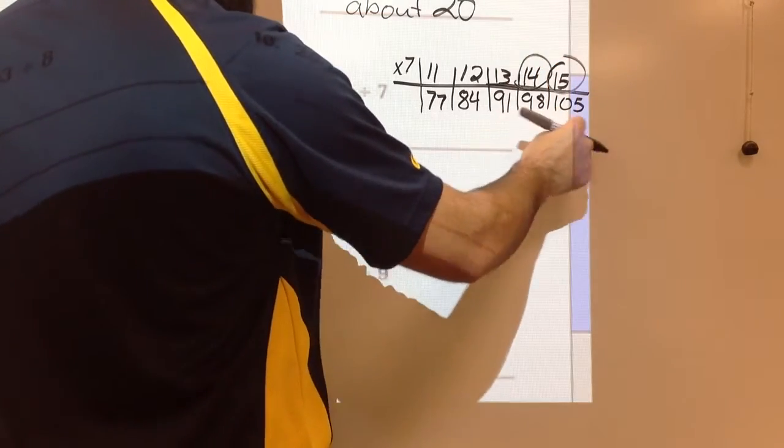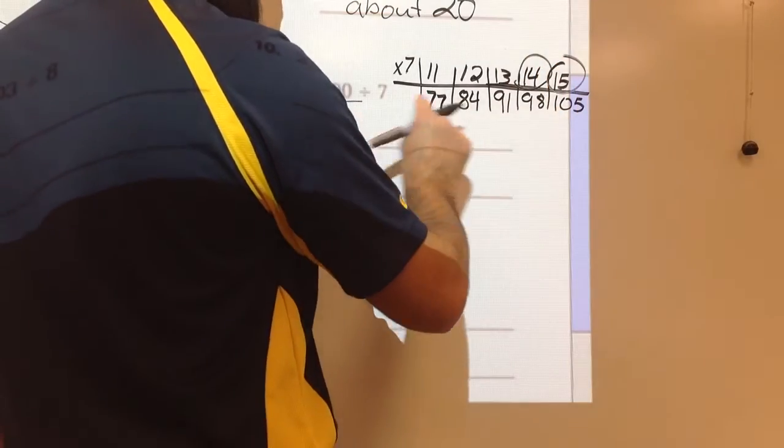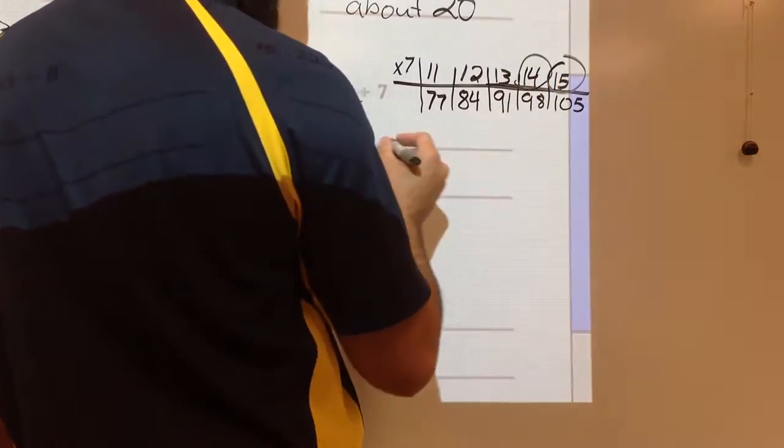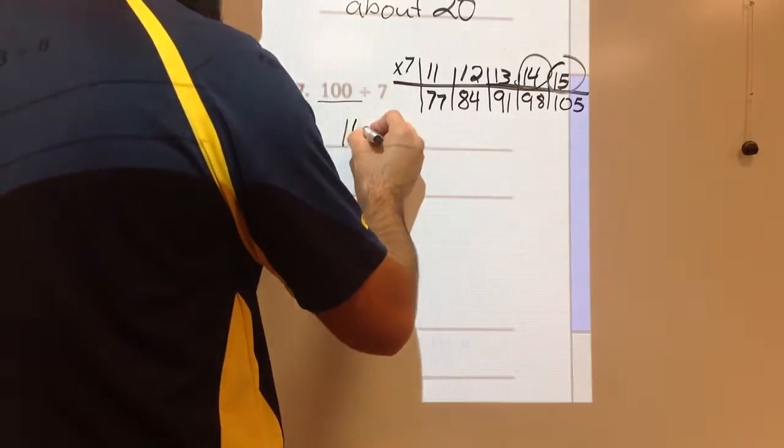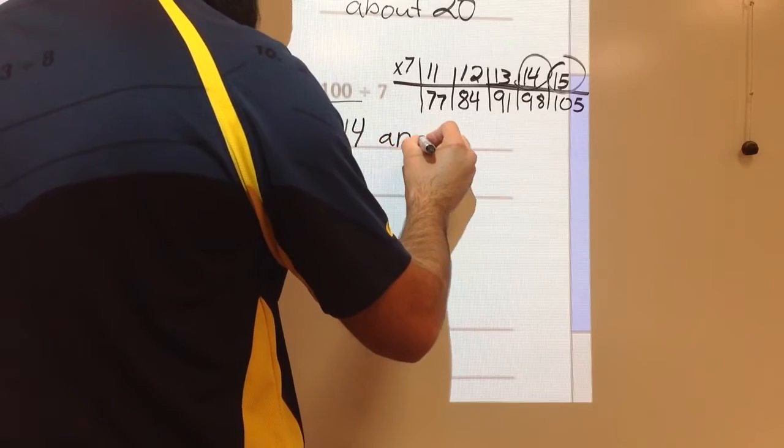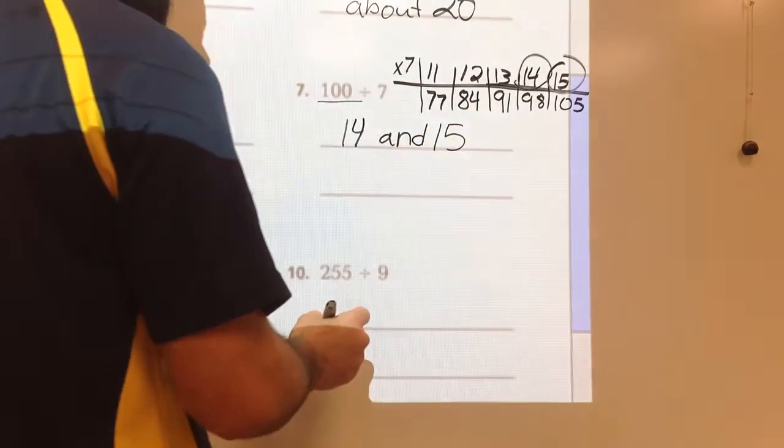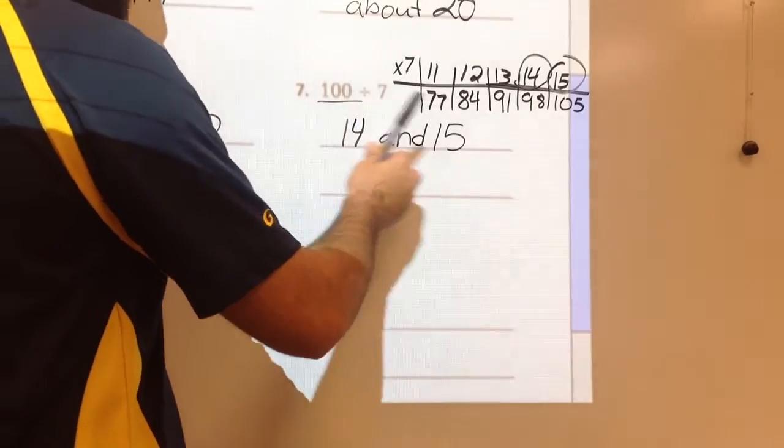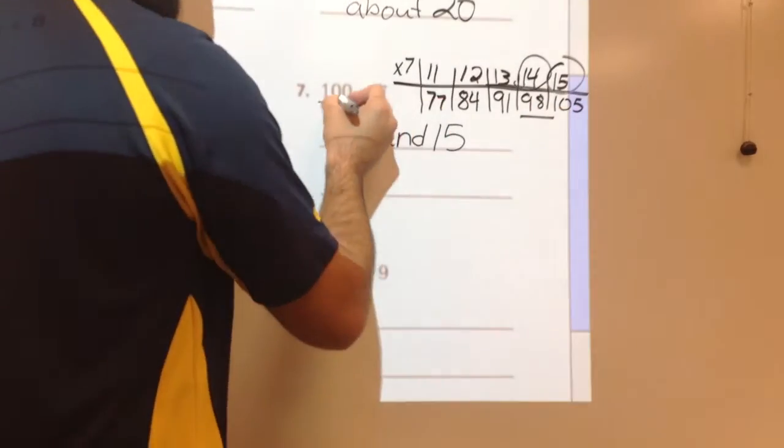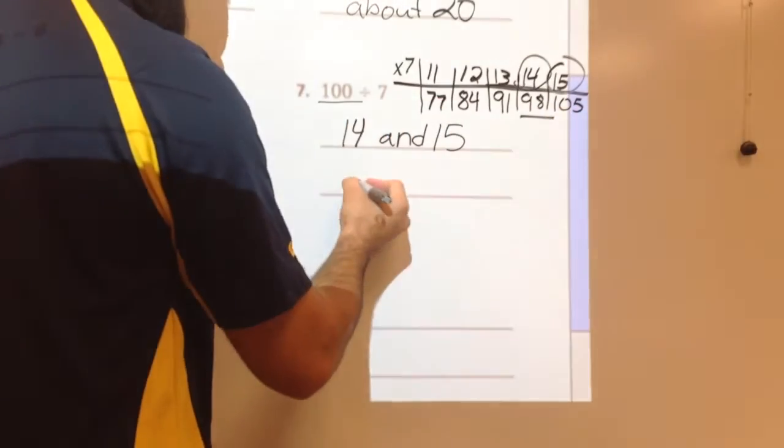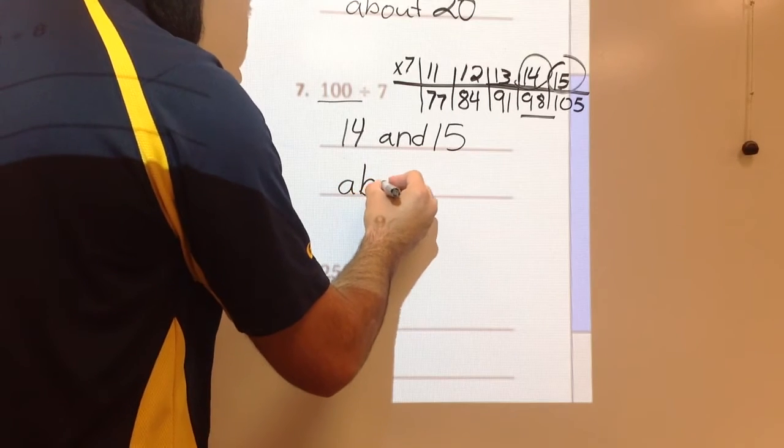Okay, you can't write these down, 100's between these, so the quotient is either, it's between 14 and 15, so you put down 14 and 15. About 14. Well, we've got a quick talker out there. And? It's going to be about 14 because 98 is closer to 100 than 105 is. Very good, very good.